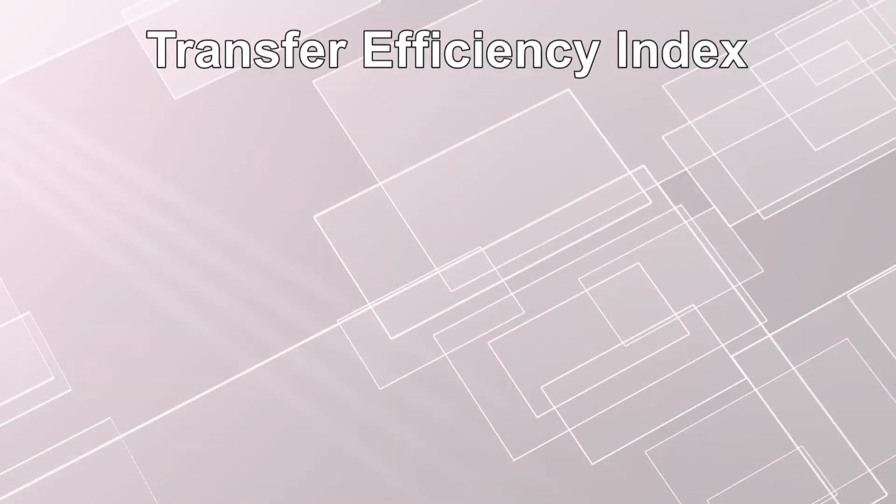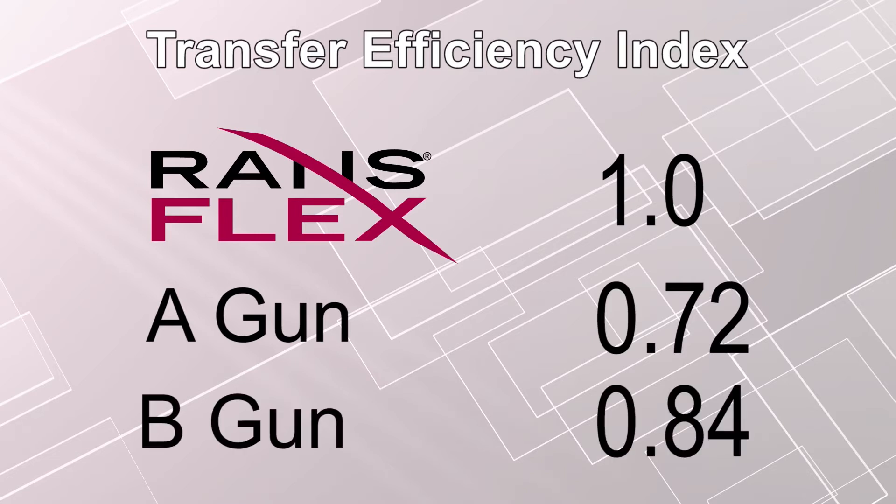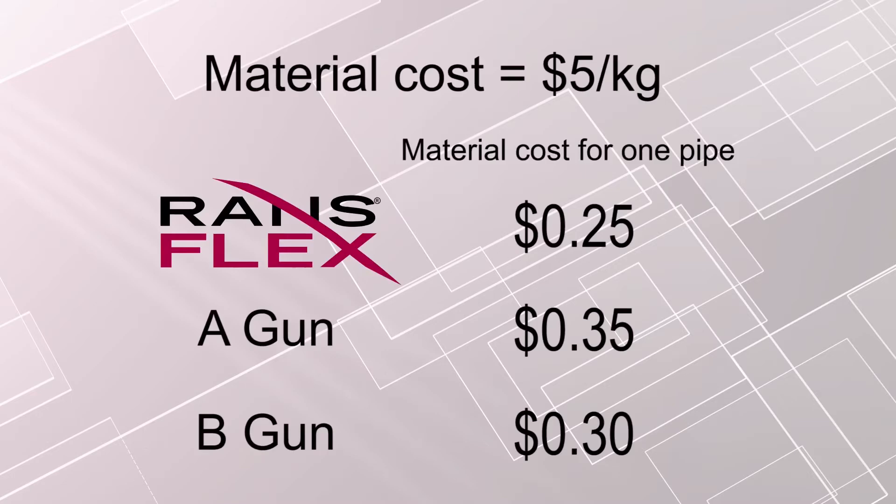RansFlex transfer efficiency is 1.0. Brand A is 0.72. Brand B is 0.84. If material price is 5 US dollars per kilogram, it costs you 25 cents with RansFlex, 35 cents with Brand A, 30 cents with Brand B.